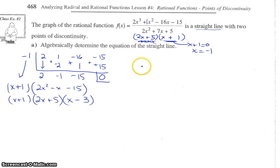So, let's rewrite this. We have now f(x) equals x plus 1, 2x plus 5, x minus 3. There's our cubic polynomial factored. And on the bottom, we have 2x plus 5 and x plus 1, also factored.